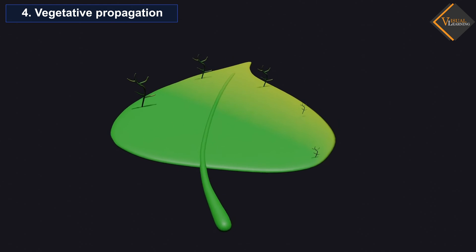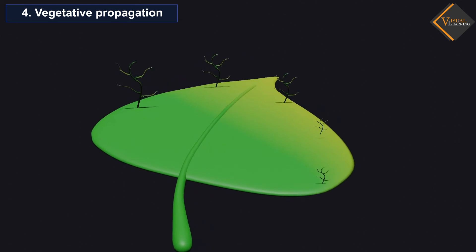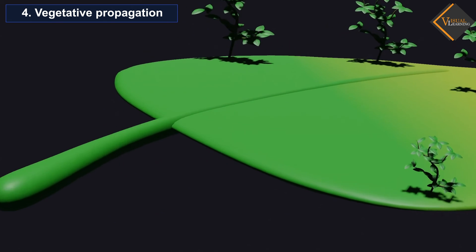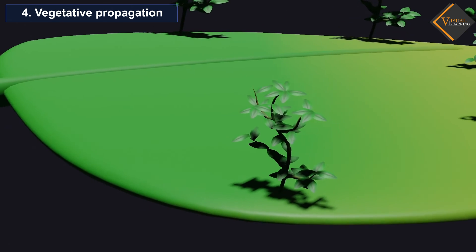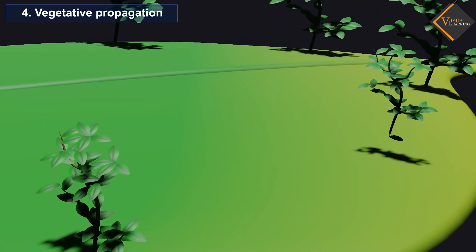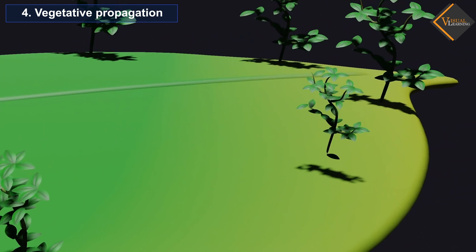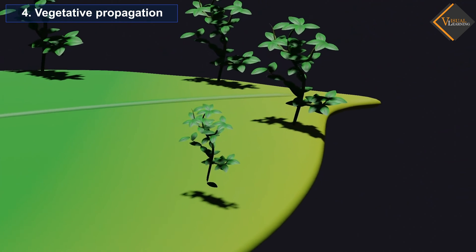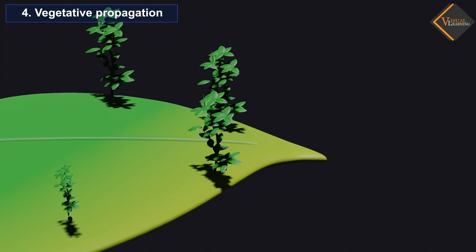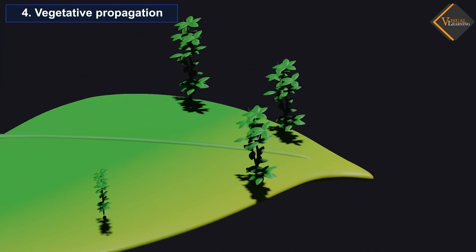Vegetative propagation: In this process, a new plant grows from the fragments of the parent plant or a specialized reproductive structure. The offspring are the exact clones of the original plant and there is no mixing of DNA. The common forms of vegetative propagation are grafting, layering, cutting, tuber, tissue culture, etc.